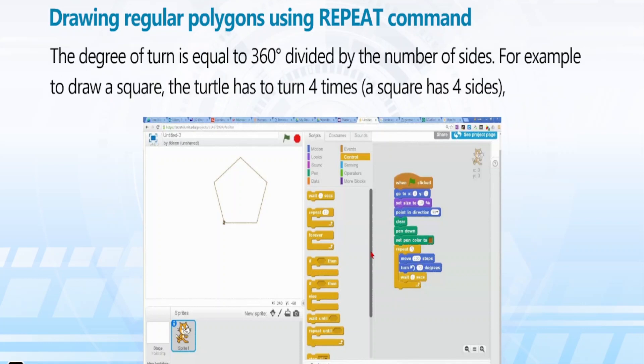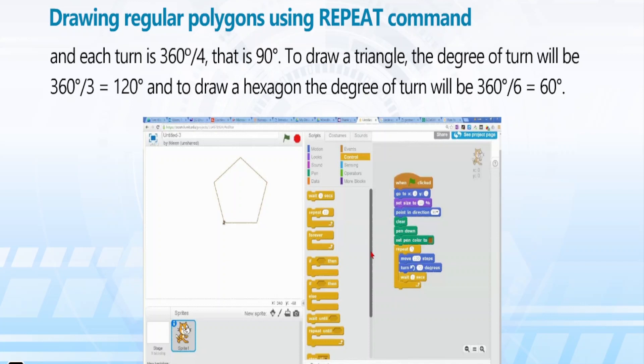The degree of turn is equal to 360 degrees divided by the number of sides. For example, to draw a square, the turtle has to turn 4 times. A square has 4 sides and each turn is 360 degrees by 4, that is 90 degrees.